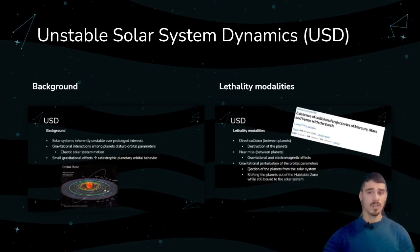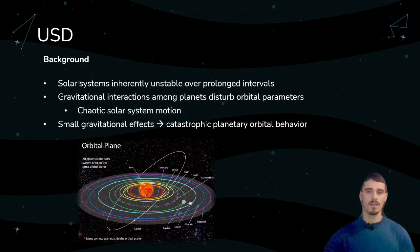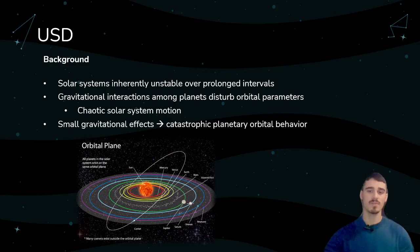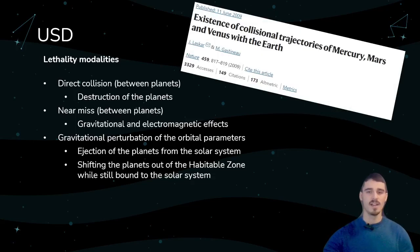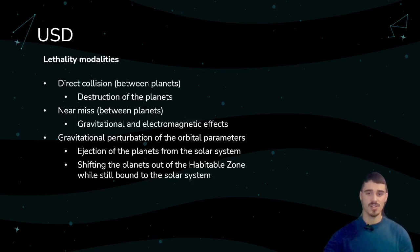Last but not least, we will look into unstable solar system dynamics. Solar systems are inherently unstable over prolonged intervals of time, for example 10 million years or more. Gravitational interactions among planets can cause their orbital parameters to shift, inducing chaotic solar system motion. Even small gravitational effects can have a massive impact over prolonged time, resulting in catastrophic planetary orbital behavior. Just like RCOs, we have four outcomes: direct collision; near-miss causing biosphere changes; ejection of a planet from the solar system; or a shift of the planet's orbit out of the habitable zone.